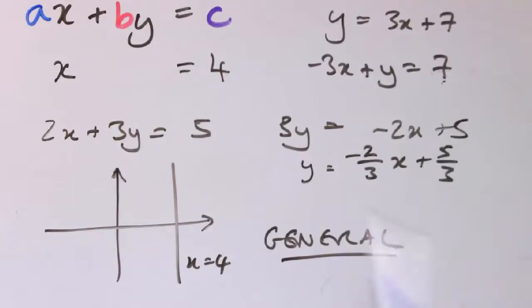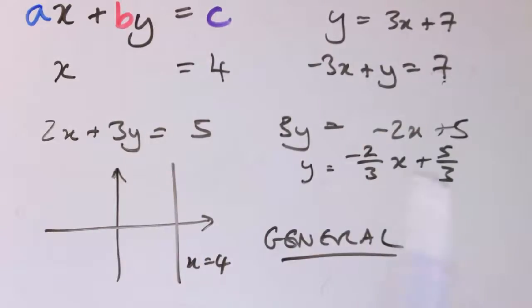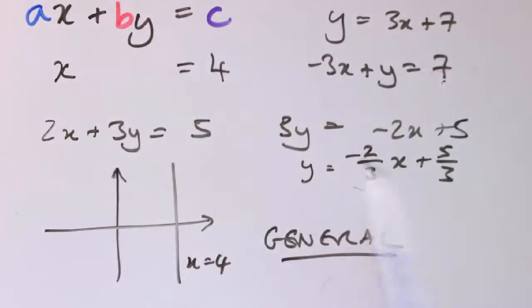This ax plus by equals c form is a genuine general form. It's also a neater form in cases like that last example, because you don't have all those awkward fractions lying around.